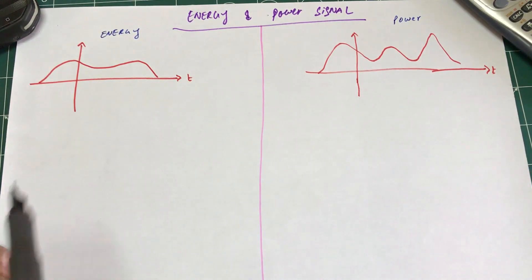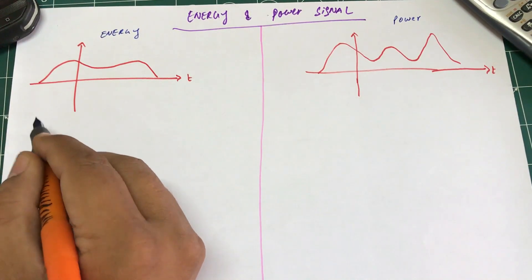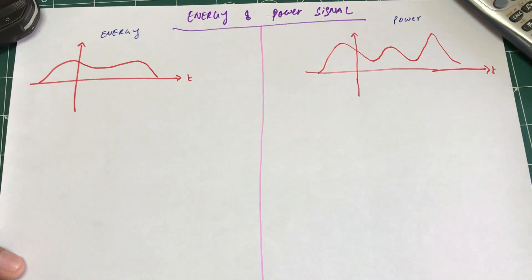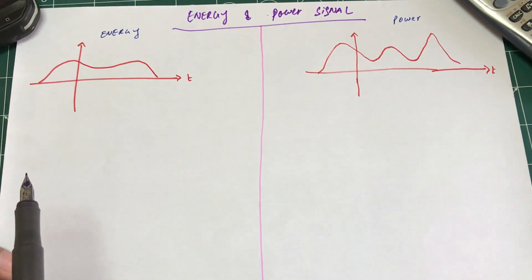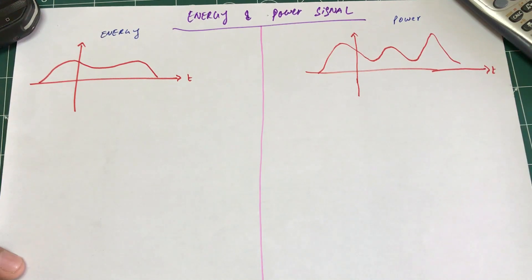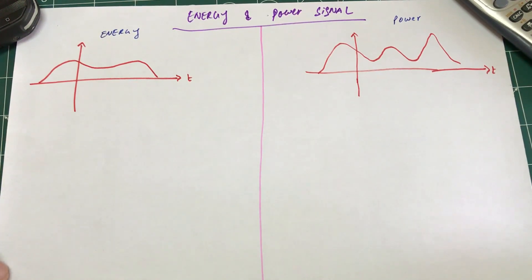An example of an energy signal could be a digital signal — like when you're sending data bits. Sometimes you have a burst of data, and then after some time you have nothing coming in. Another example could be an exponential or decaying signal, where the signal starts off with high energy and then decays as time passes.